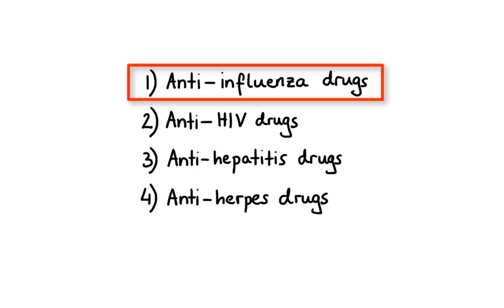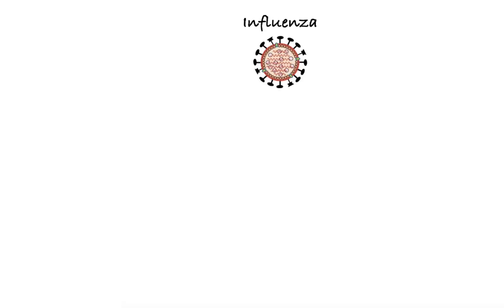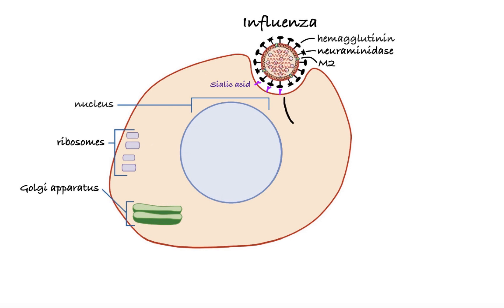Influenza is an enveloped virus with a genome made up of single-stranded segmented RNA. The viral envelope is made up of a lipid bilayer that contains three of the viral transmembrane proteins: hemagglutinin, neuraminidase, and matrix 2, abbreviated as M2. The first step of the influenza virus infection involves binding of hemagglutinin to sialic acid residues on the surface of the host cell, which results in engulfment of the virus into the cell via endocytosis.